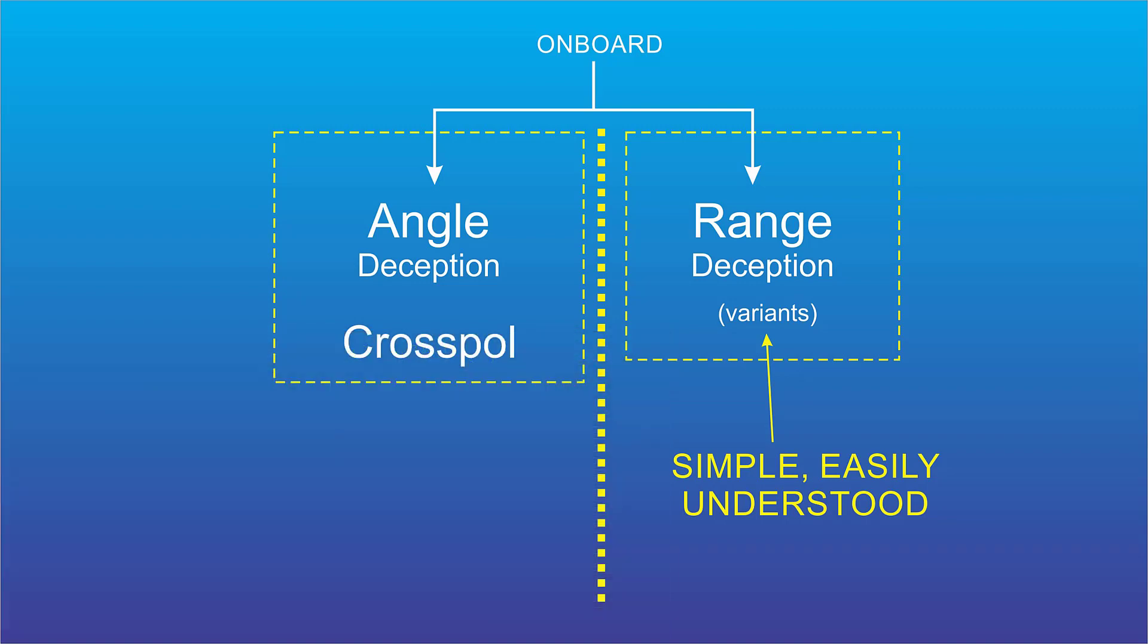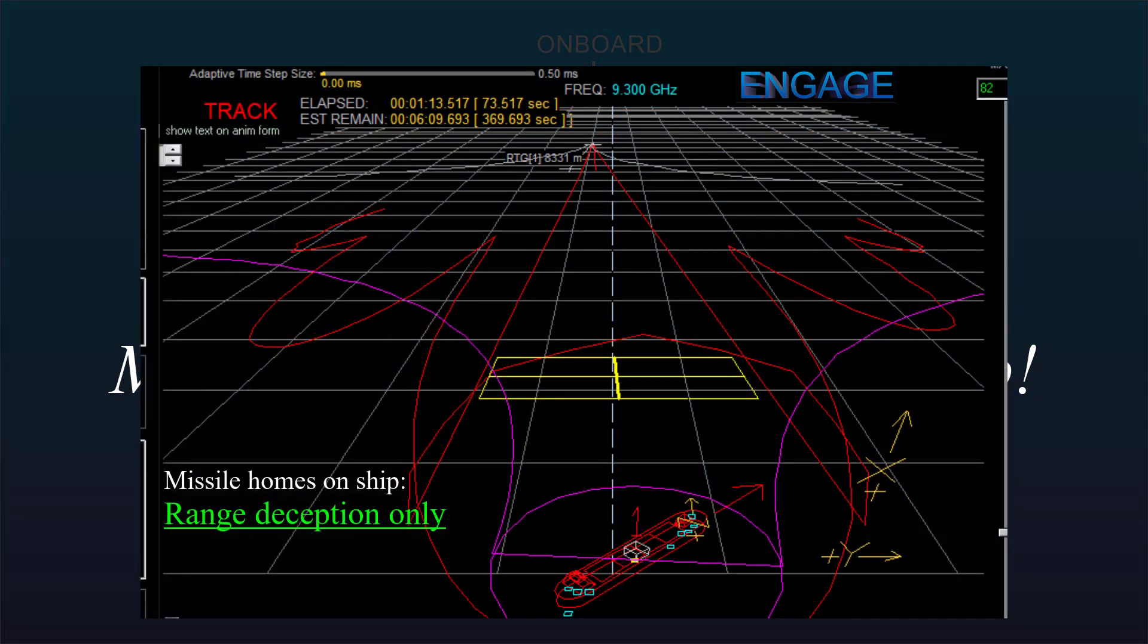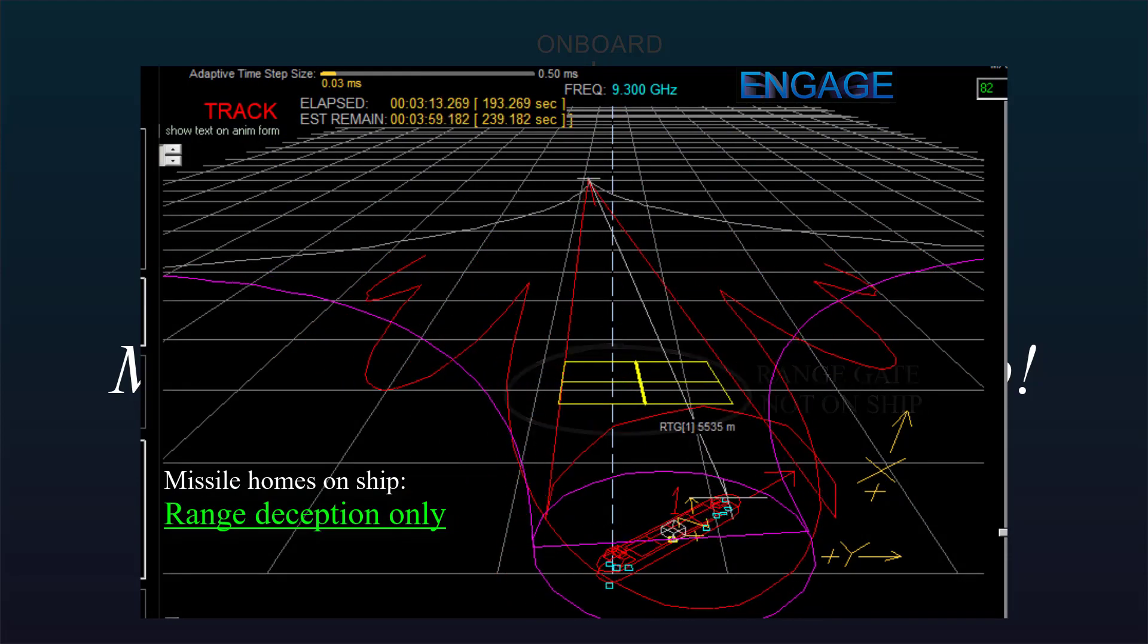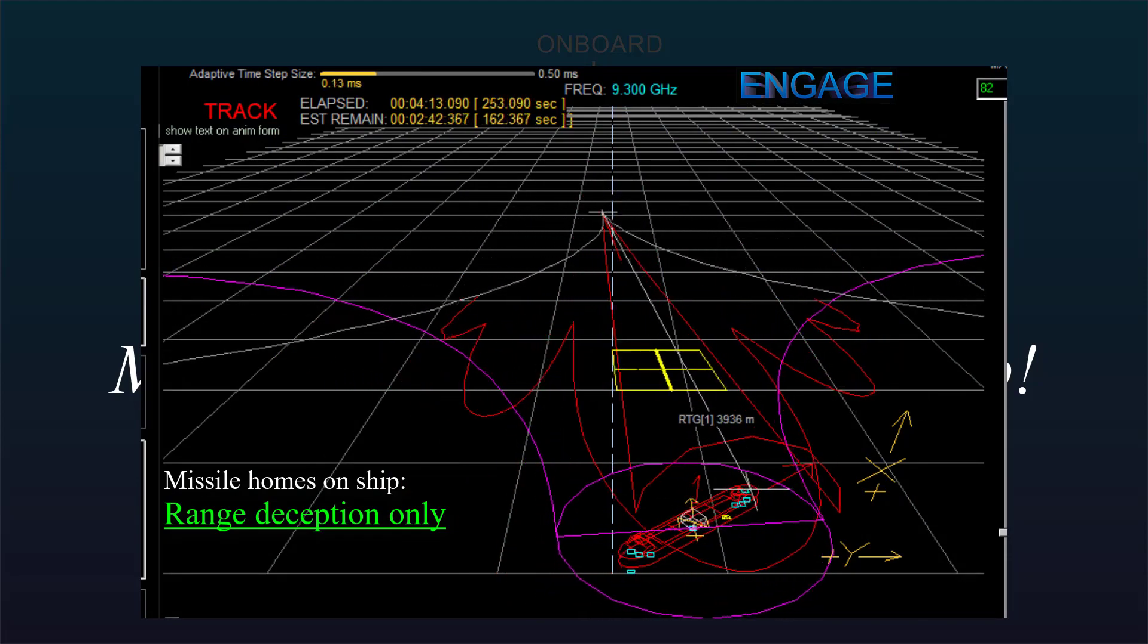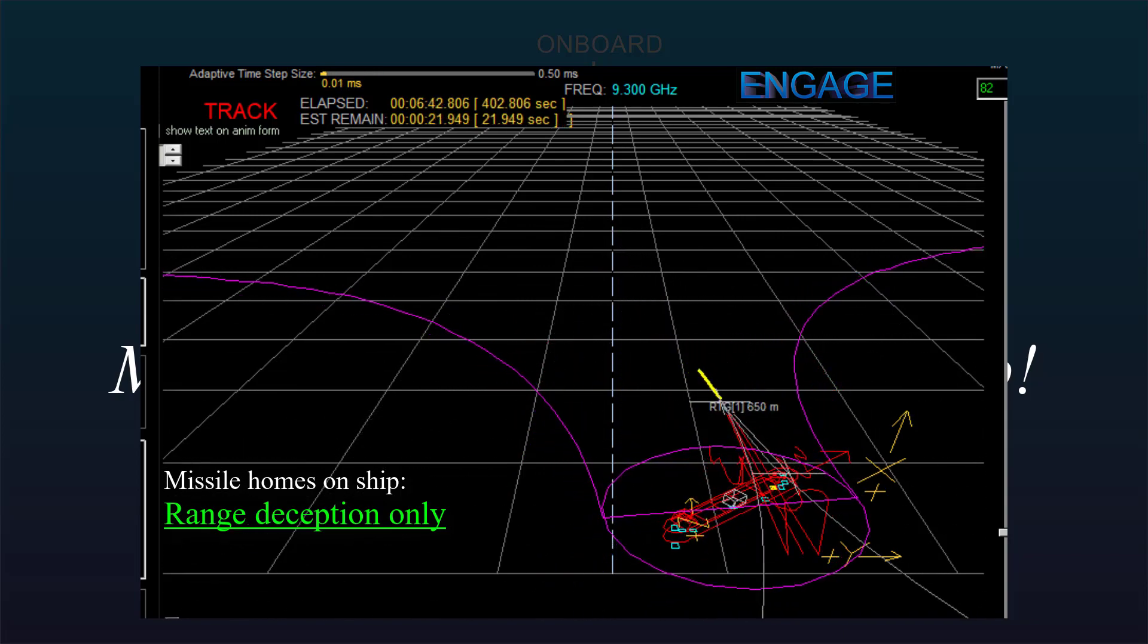But whatever the method, the jammer radiates the signals so the missile can't get range information on the ship. Now, key point here, range countermeasures don't budge the seeker antenna. It's still pointing at the ship. Just the range gate is displaced. The seeker can't tell how far away the ship is, but the guidance information, the angle guidance information is still good. The missile can still fly along a heading that takes it right through the ship.